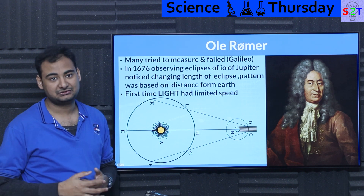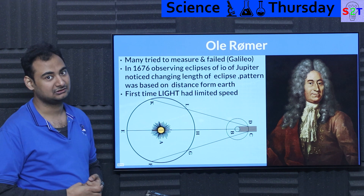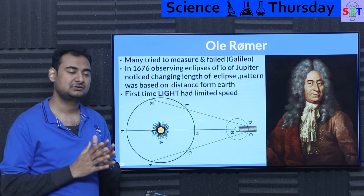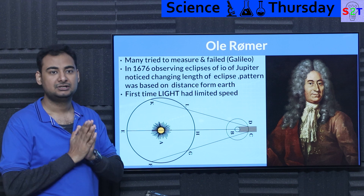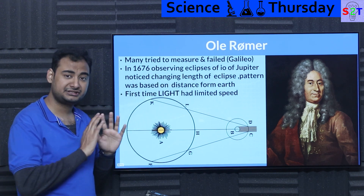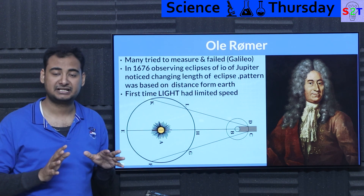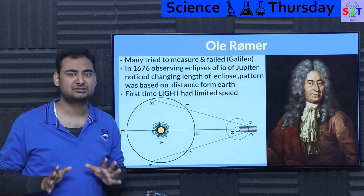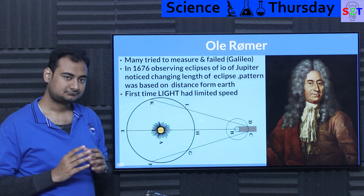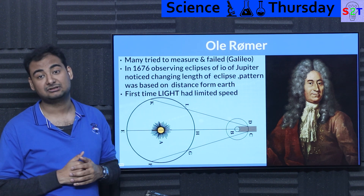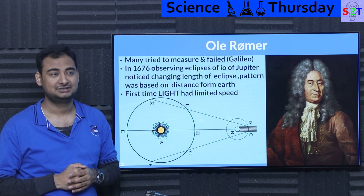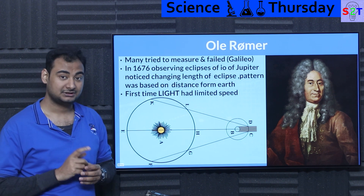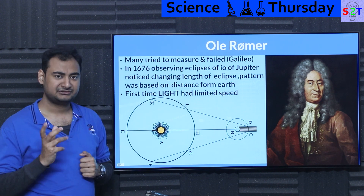Now how did we reach this conclusion about the speed of light? Ole Rømer is the first one who opened it up. Many people had tried to measure the speed of light before — Galileo tried, many smart people tried — but most failed. To give context, Galileo thought light was only 20 to 30 times faster than sound, which is very wrong. Light speed is much faster than that.